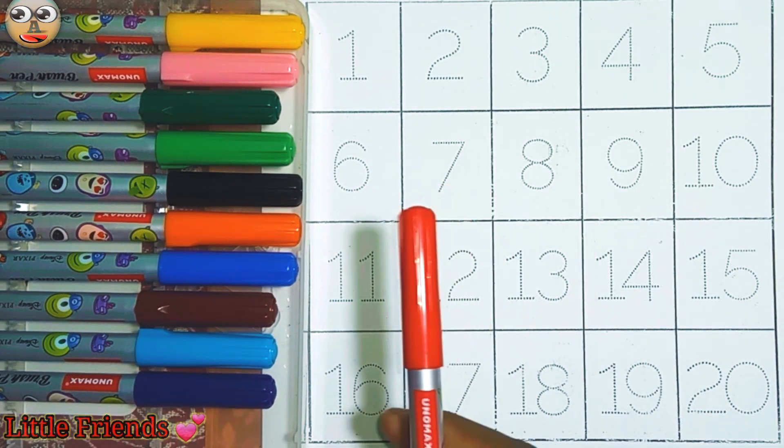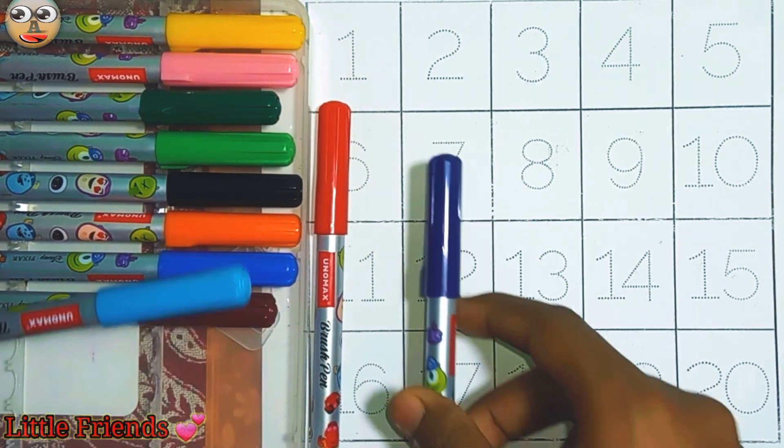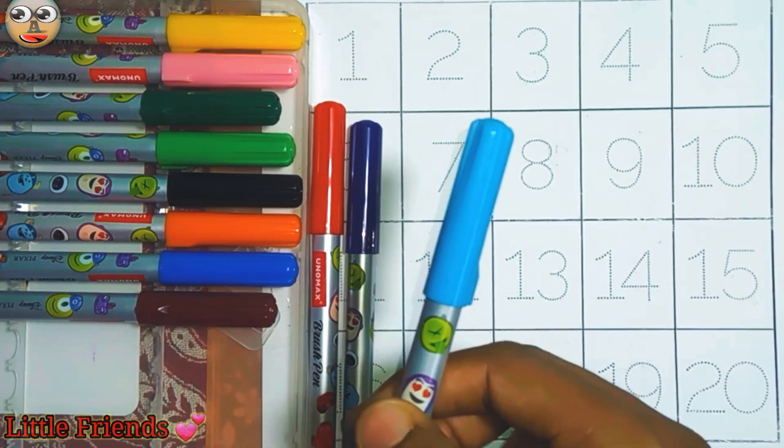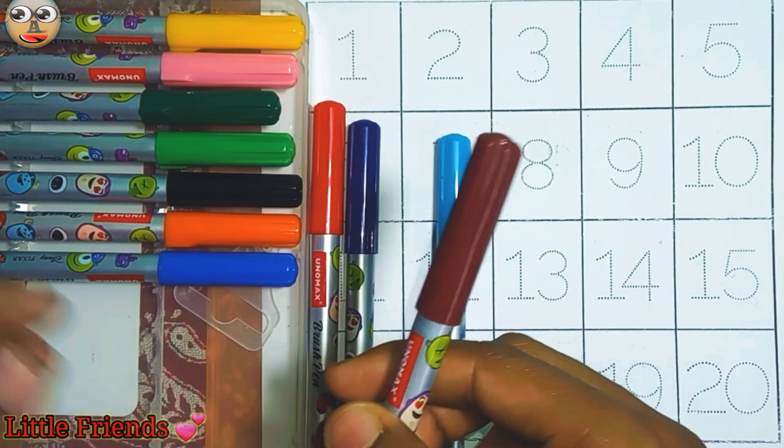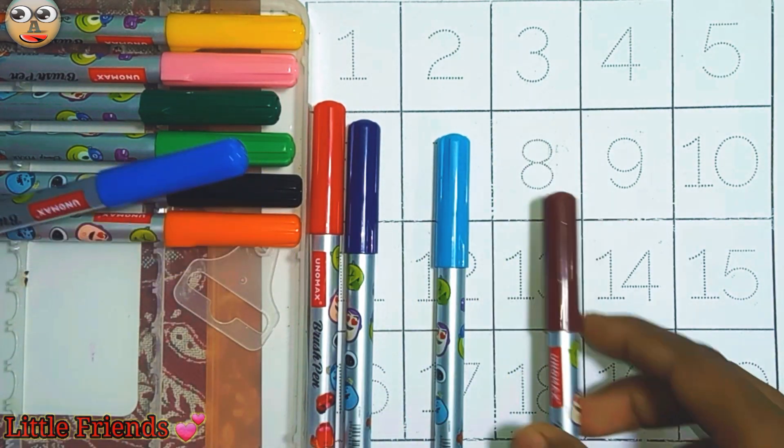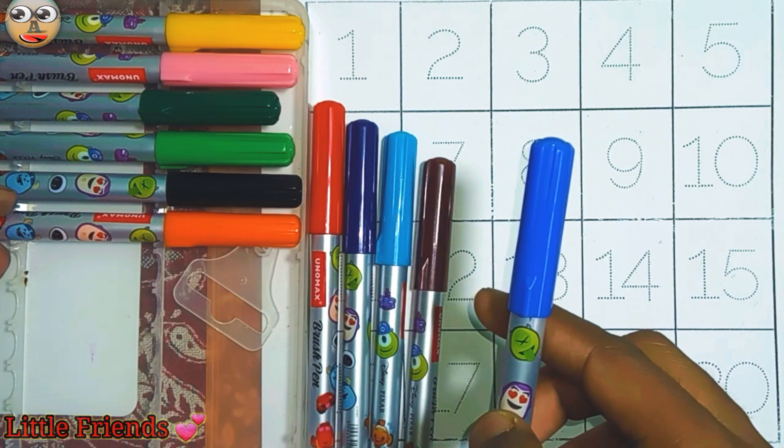This is red color. This is purple color. This is sky blue color. This is brown color. This is blue color.